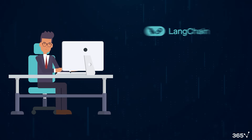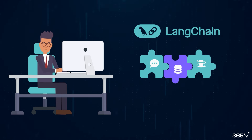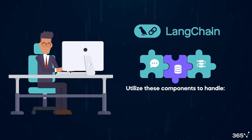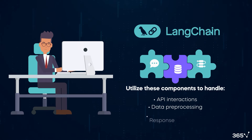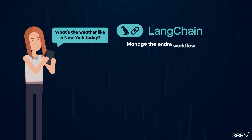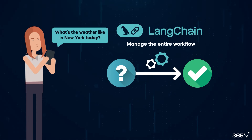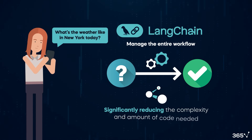Alternatively, LangChain lets you leverage pre-built components to build chatbots. You utilize these components to handle the API interactions, data pre-processing, and response generation. For example, if a user asks, "What's the weather like in New York today?" LangChain can manage the entire workflow, from understanding the question to fetching and formatting the appropriate answer, significantly reducing the complexity and amount of code needed.